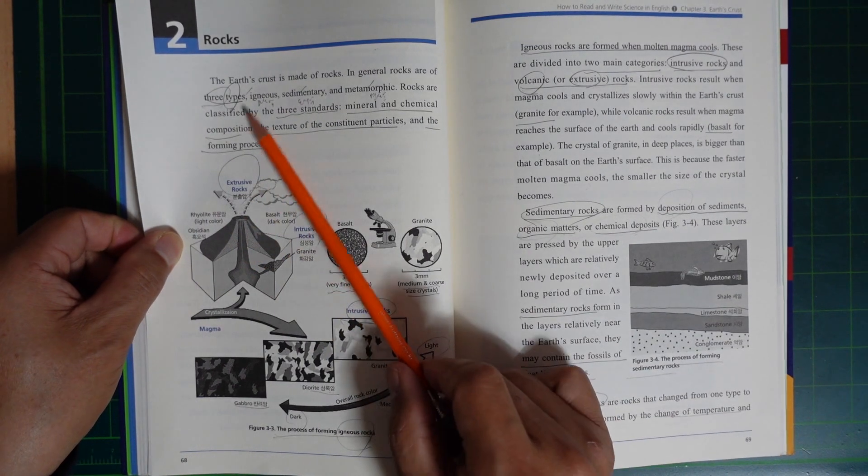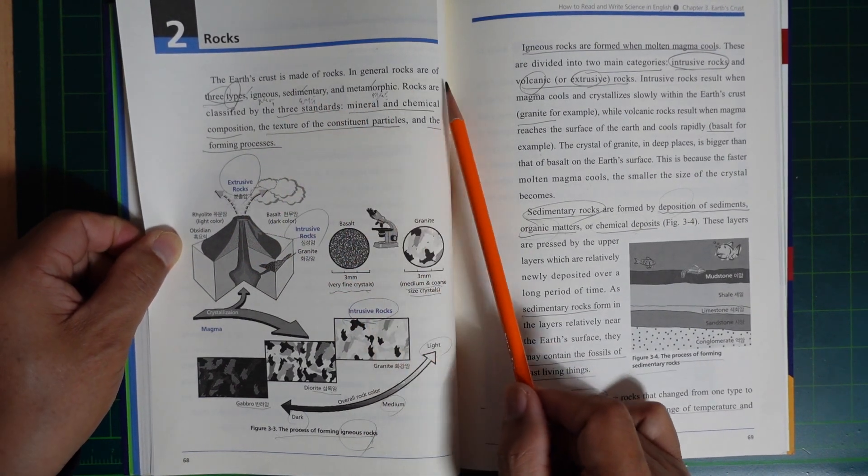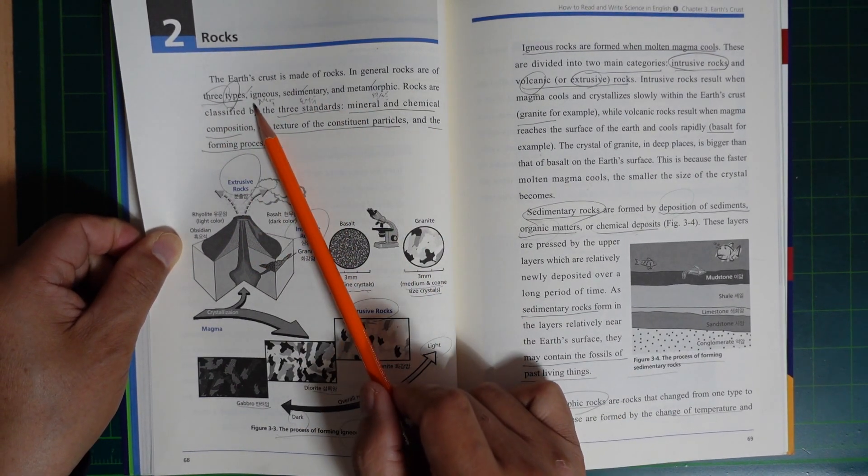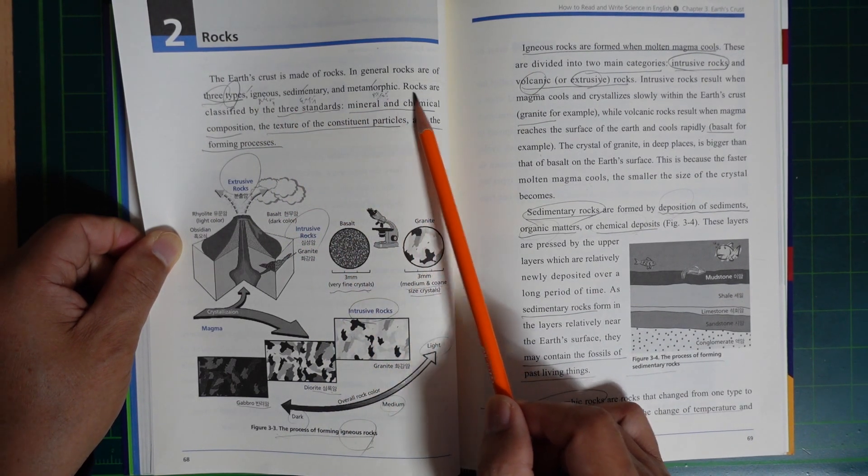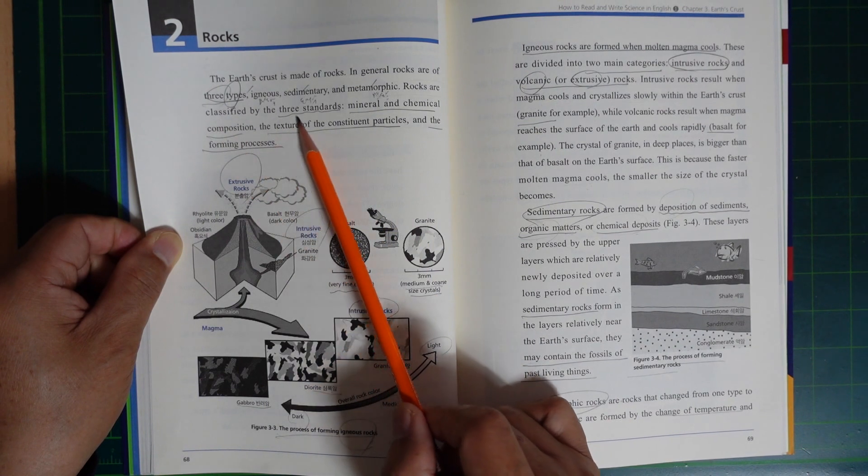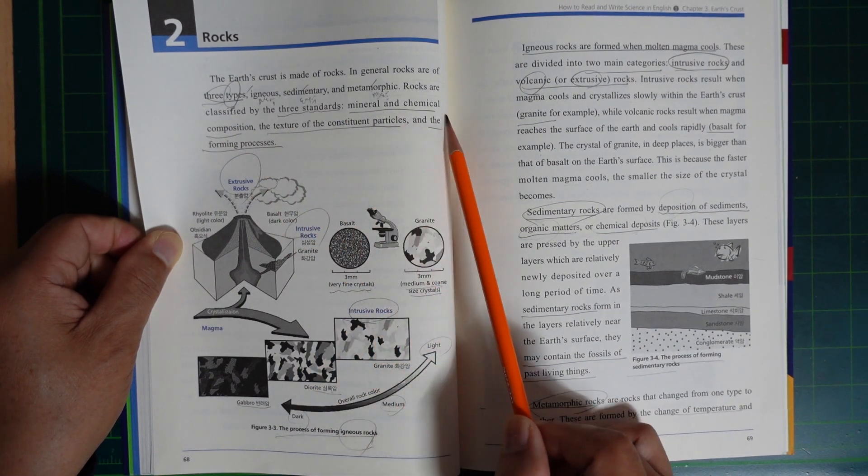Rock. The Earth's crust is made of rocks. In general, rocks are of three types: igneous, sedimentary, and metamorphic. Rocks are classified by three standards: mineral and chemical components.